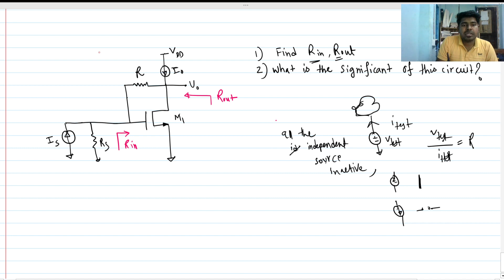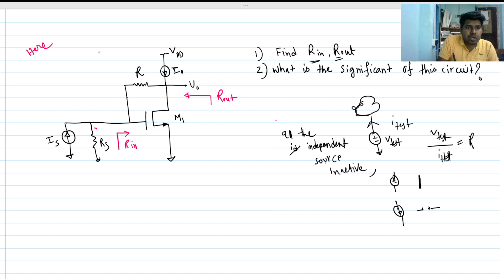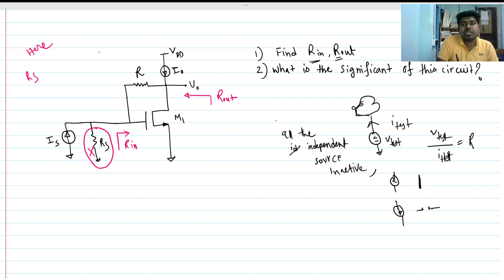Here we are going to solve R_in and R_out intuitively. We know that every current source has a finite parallel resistance R_s. For our intuitive, easy calculation, we will assume R_s is very much greater than R_in.